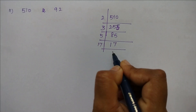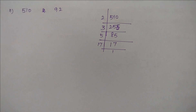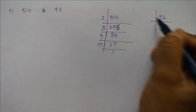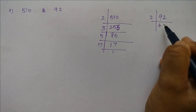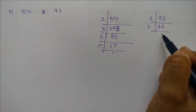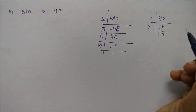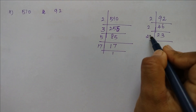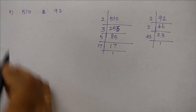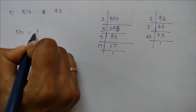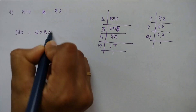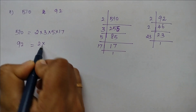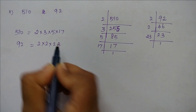The prime factorization of 510: dividing by 2, then 3, then 5, then 17 gives 1. So the prime factors of 510 are 2×3×5×17. For 92: dividing by 2 gives 46, again by 2 gives 23, and 23 divided by 23 is 1. So the prime factors of 92 are 2²×23.